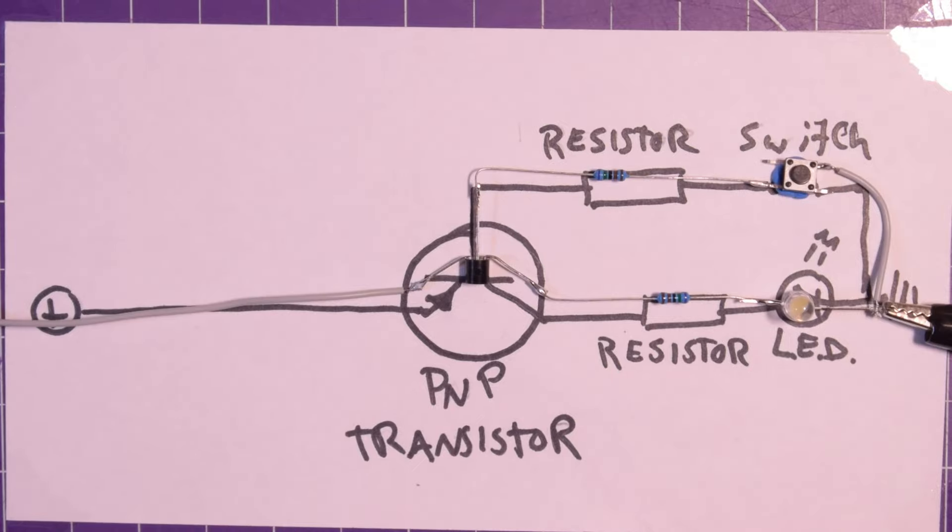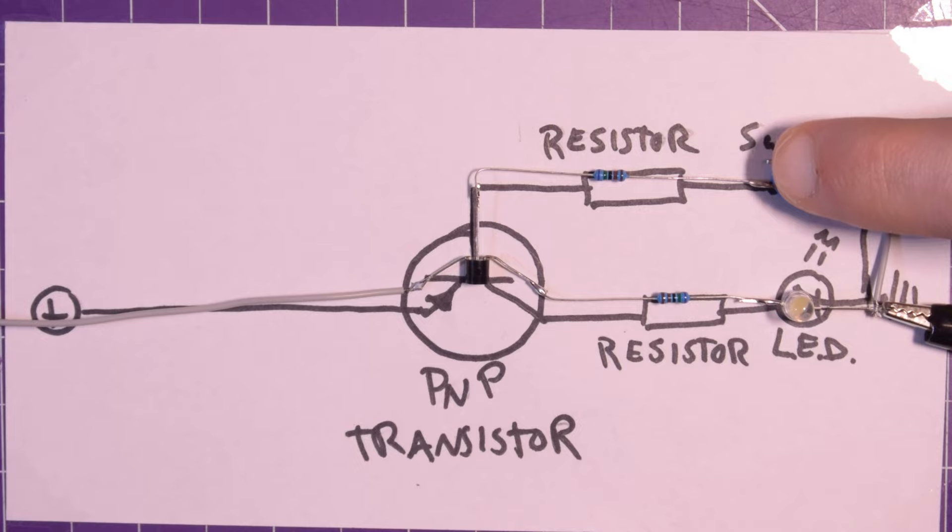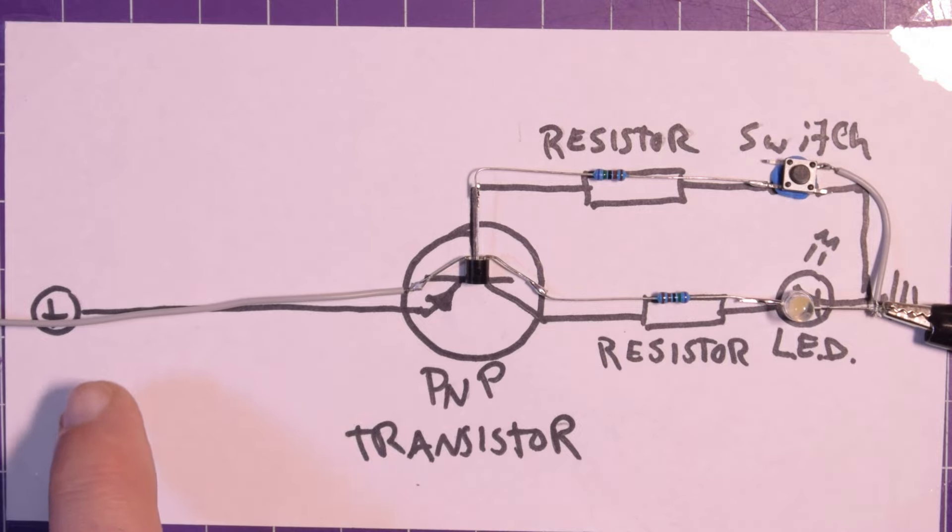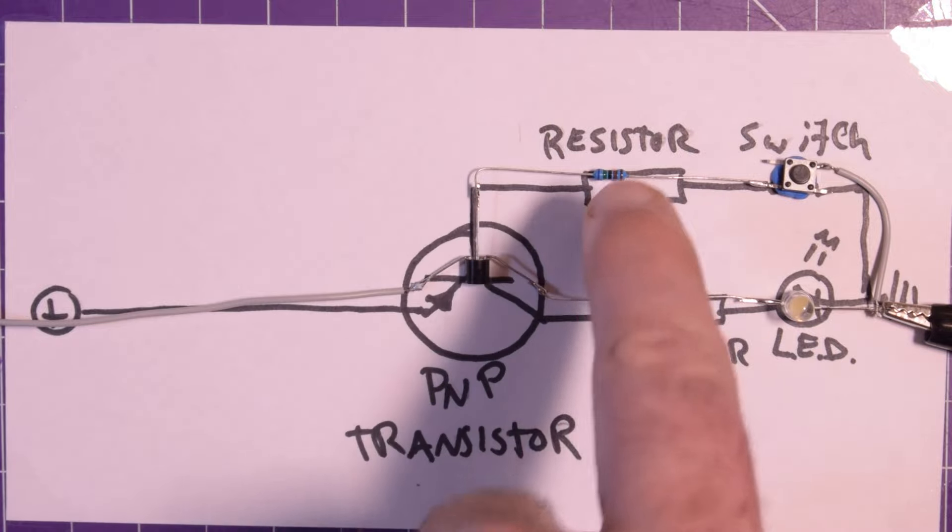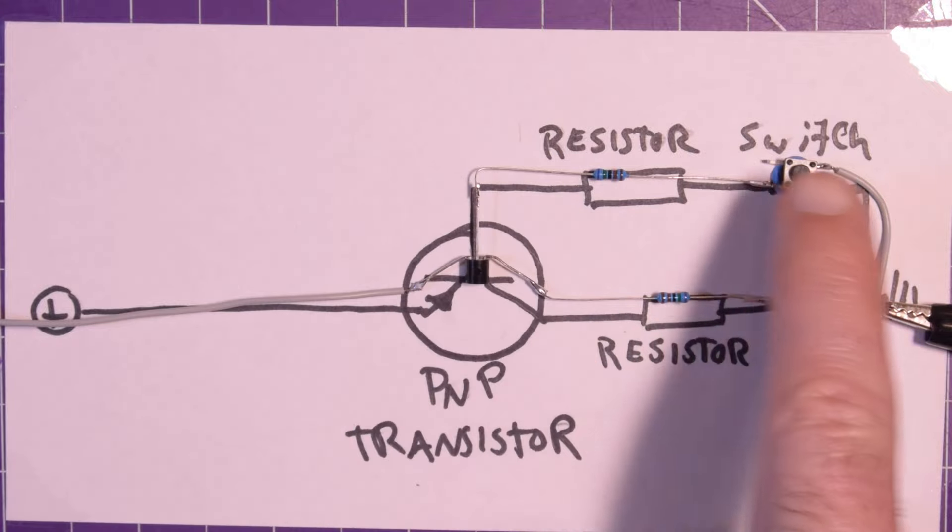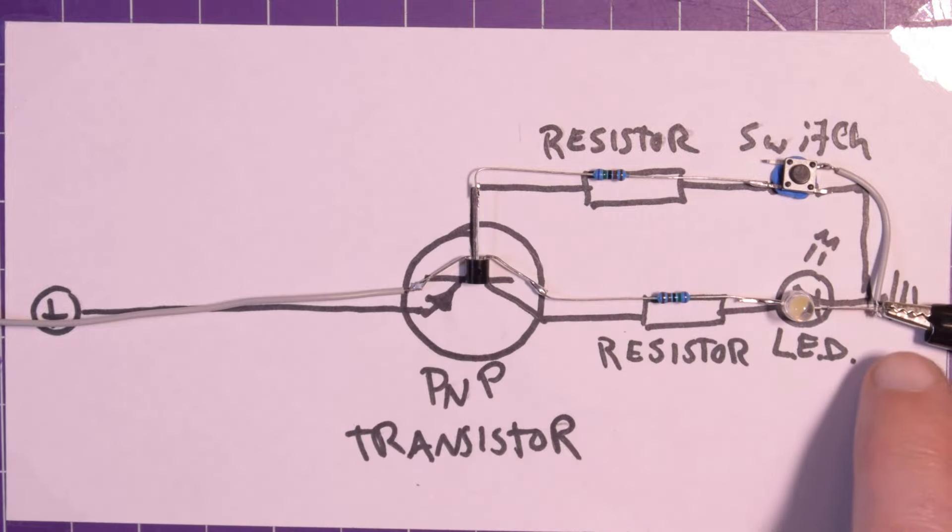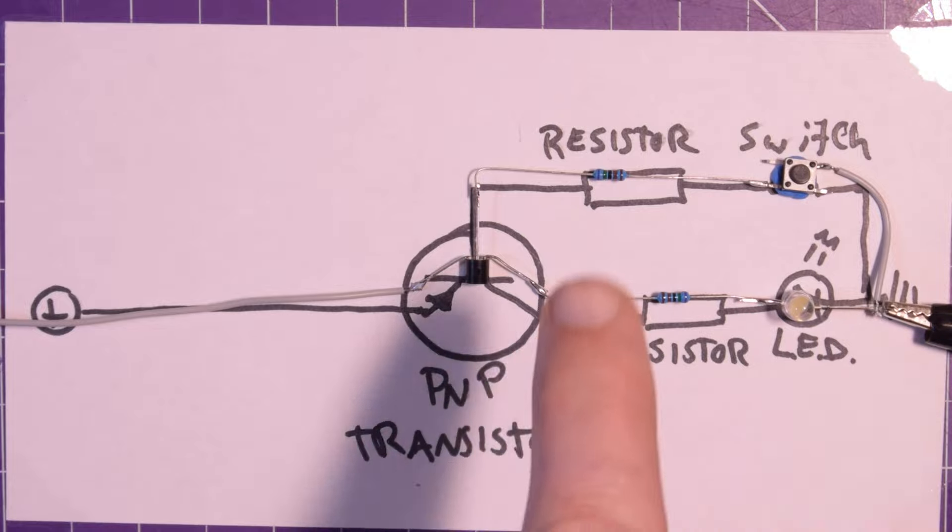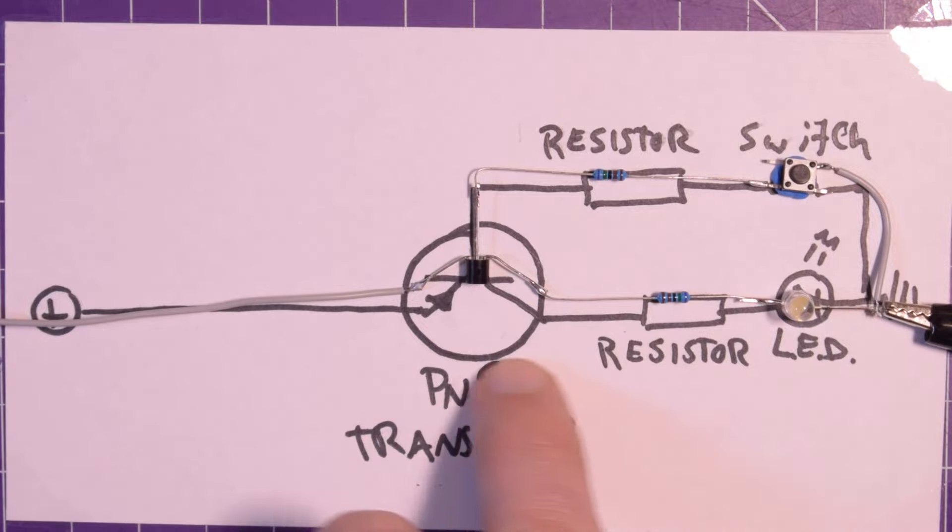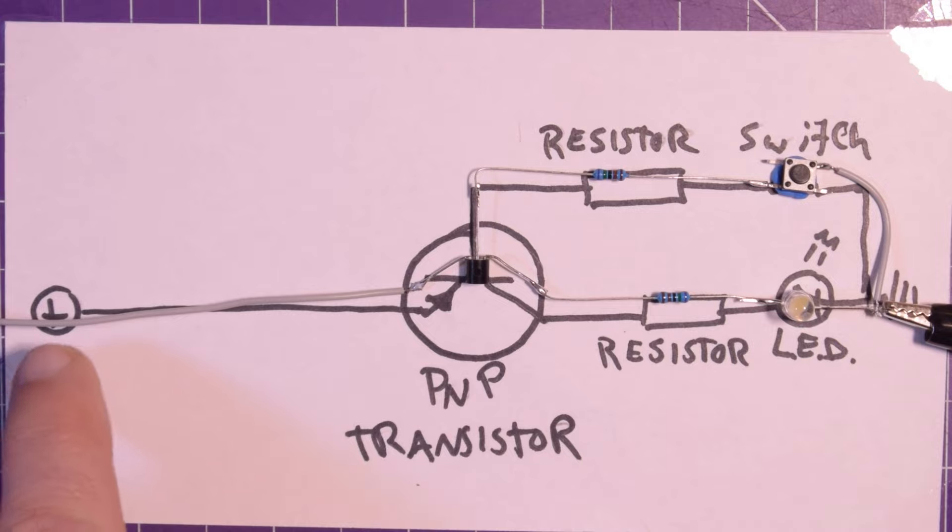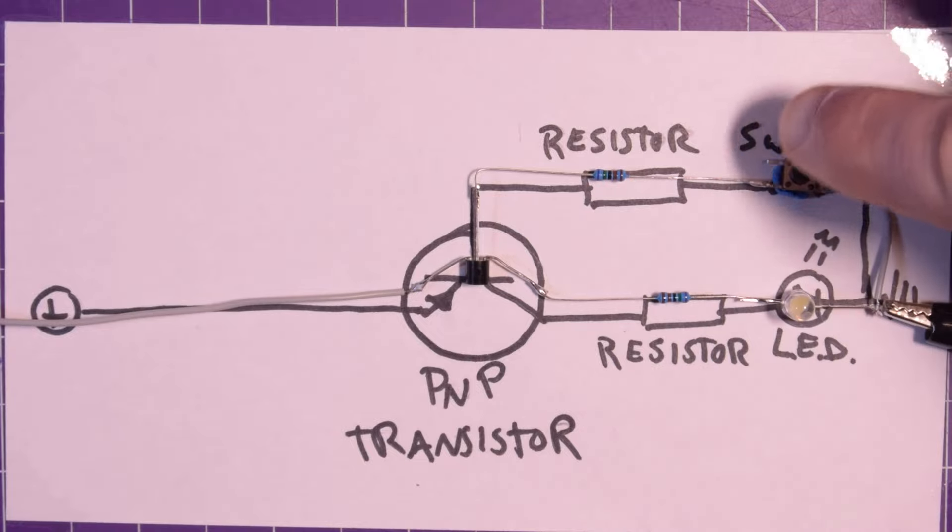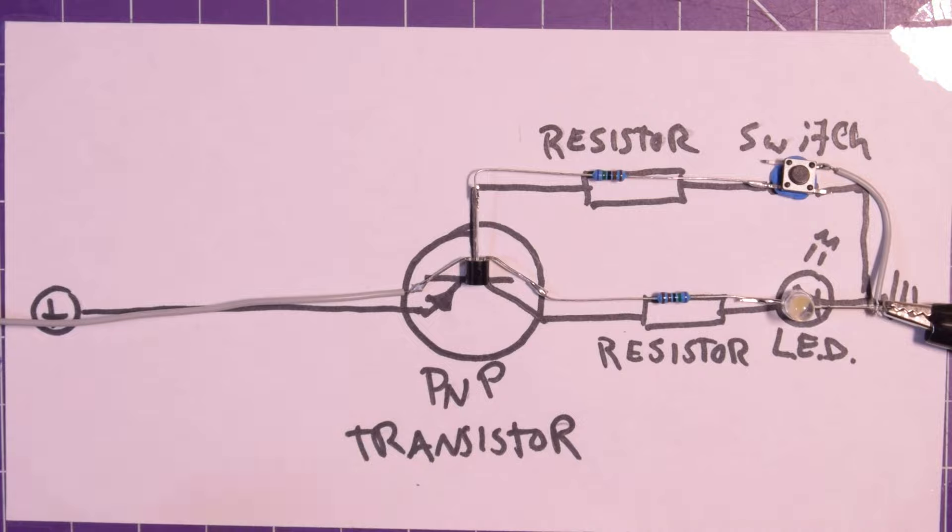Of course it does. What is this, amateur hour? So when I press the switch here the LED lights. And again, same thing: the current is allowed to flow between positive and the base of the transistor, through the resistor, through the switch to ground, which then allows the transistor to switch this portion closed. And so the current is allowed to flow through the transistor, through the resistor, through the LED, and to ground. And it really is just that simple.